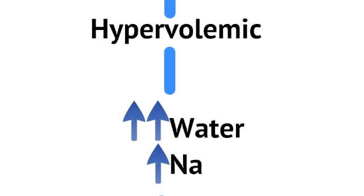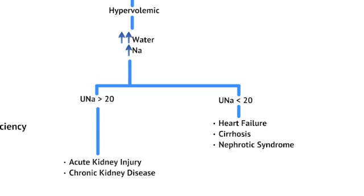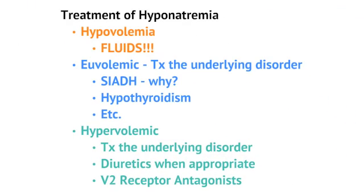In hypervolemic hyponatremia, you develop a lot of water in the intravascular space along with an increase in sodium. We can separate causes based on urine sodium levels. For urine sodium greater than 20, the patient likely has acute kidney injury or chronic kidney disease, meaning the kidneys can't regulate sodium content. For urine sodium less than 20, they're hypervolemic but acting like they're dehydrated, trying to retain sodium — likely due to poor perfusion or third spacing, such as in heart failure, cirrhosis, or nephrotic syndrome.